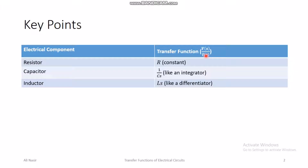Ohm's law and all electric circuit laws work in the Laplace domain as well. We assume zero initial conditions, meaning the capacitor initially has zero charge and the inductor initially has zero current. Under zero initial conditions, V over I in the Laplace domain for a resistor equals R, for a capacitor equals 1/(Cs), and for an inductor equals Ls, where L is inductance, C is capacitance, and R is resistance.